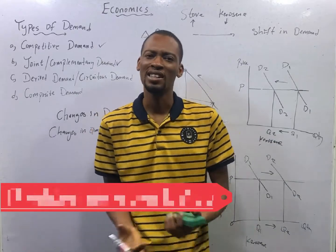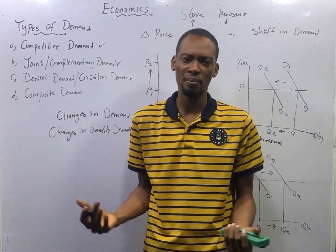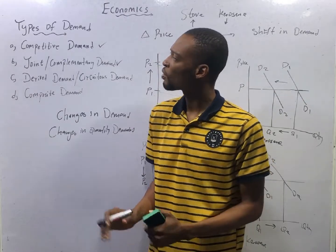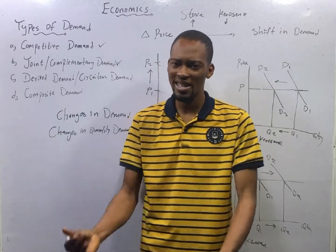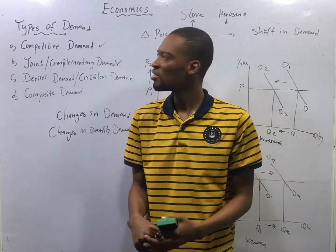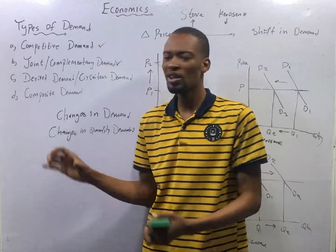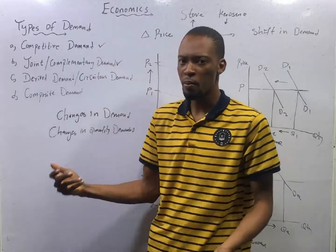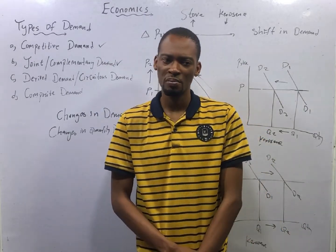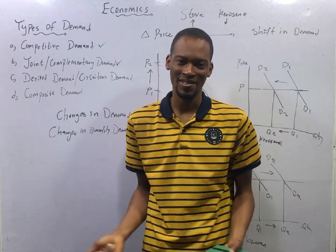Before then, install the Flash JAMB app. Activate, open the app, go to economics, choose random, and under topic choose types of demand. Only questions under demand will pop up and you can start practicing. Before we get to the question and answers session — see you.